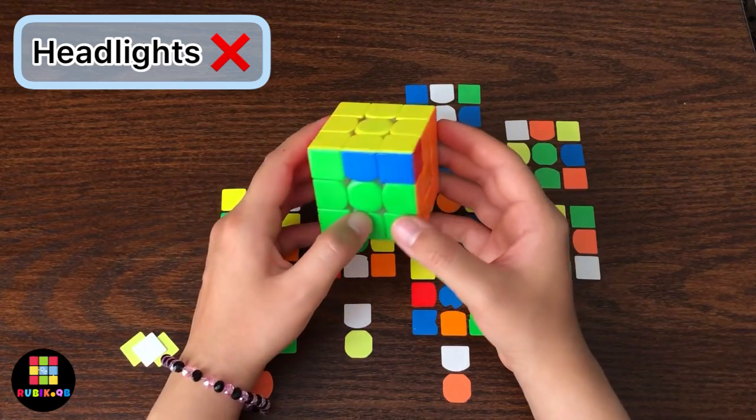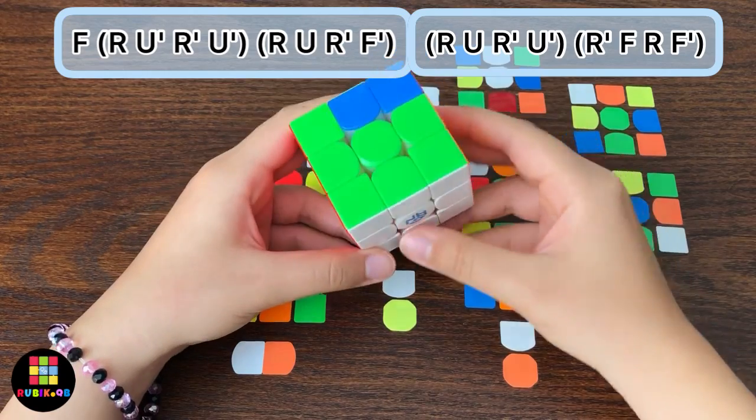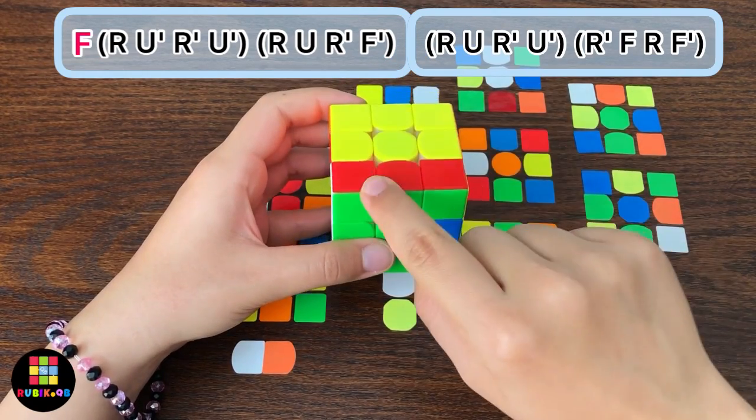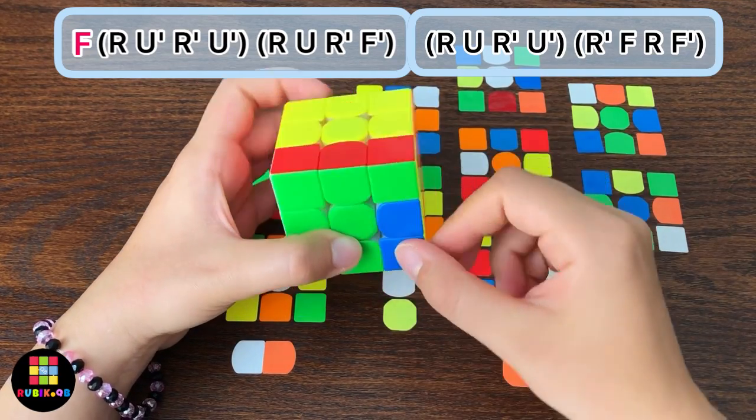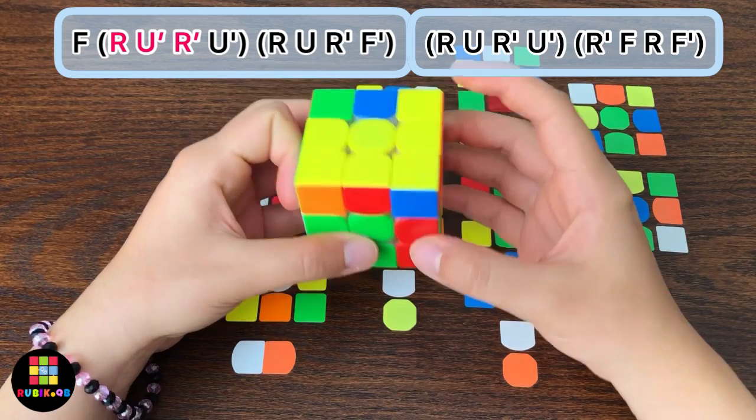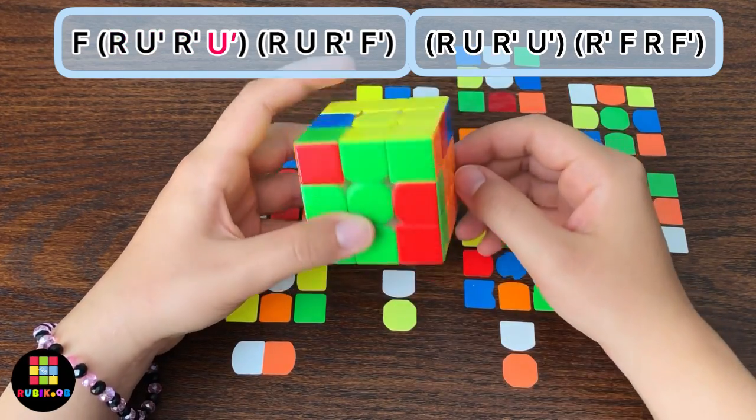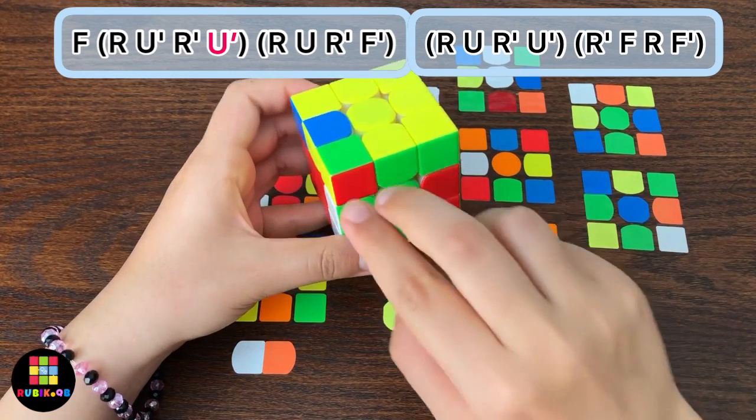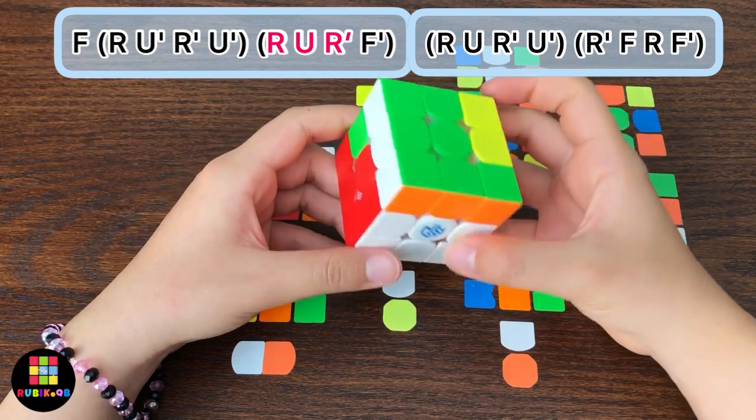Again, if it's hard for you to memorize the algorithm just keep tracking these two F2Ls. So do F and bring this F2L into the top layer, then insert this pair into this empty slot by doing R U' R'. And now do a U move, sorry do a U', and put this F2L into the correct position which is right here. So do R U R' and with an F' move finish your cross.